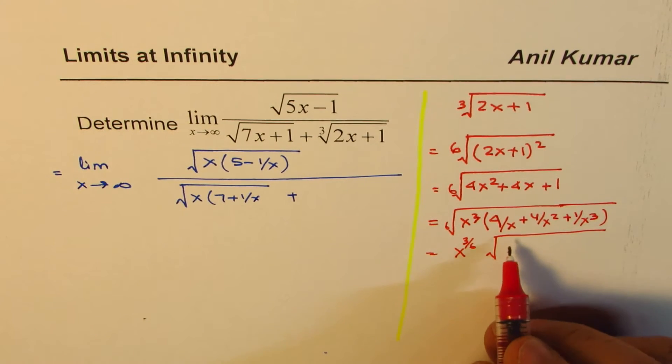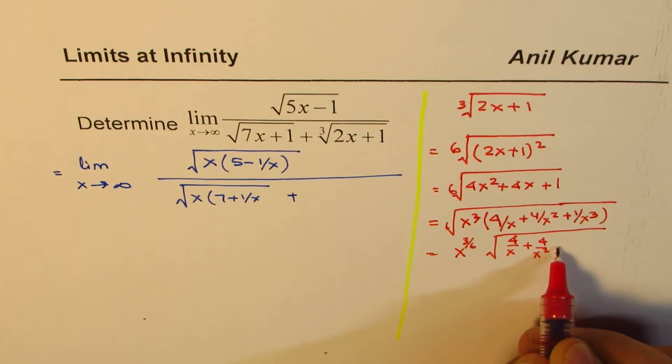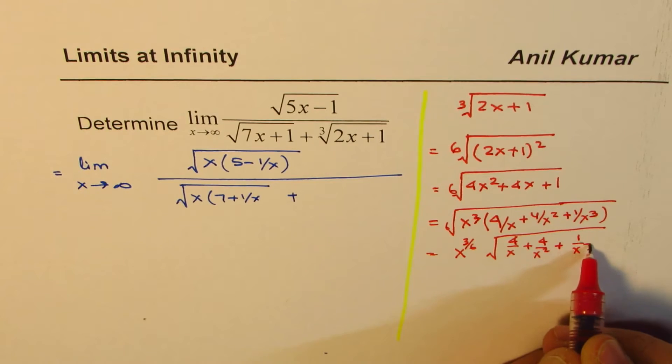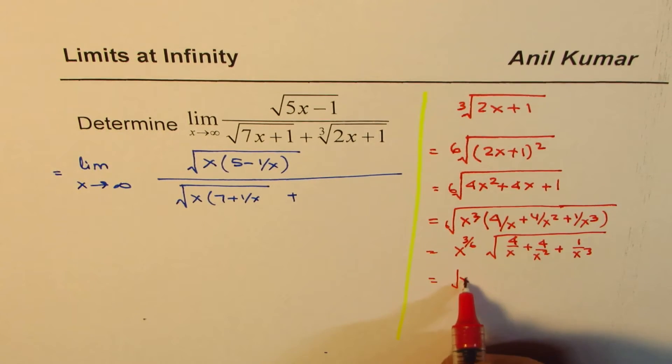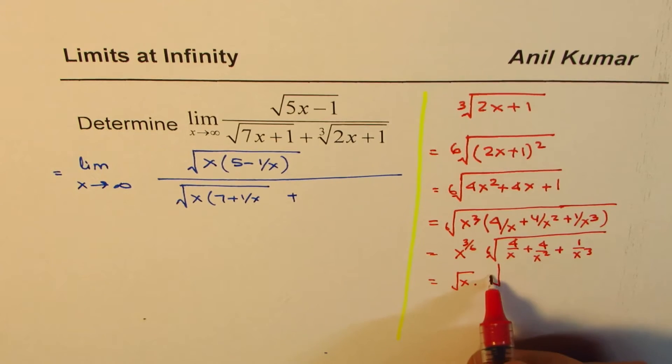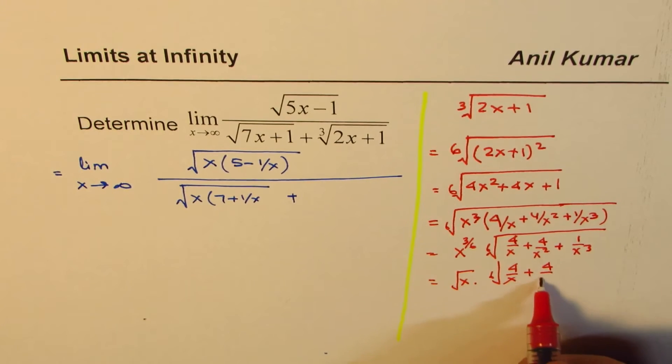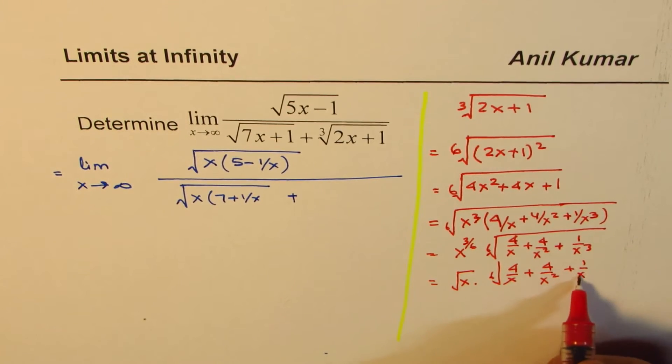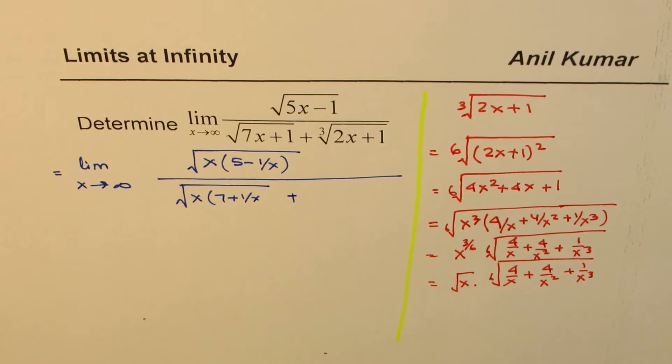And within the square root, we get 4 over x plus 4 over x square plus 1 over x cube. Or I get here square root of x times, this is sixth root, sixth root of 4 over x plus 4 over x square plus 1 over x cube. So do you understand these steps? So go through these steps, they are very critical.